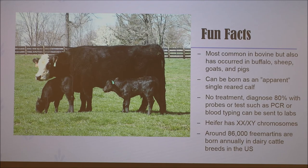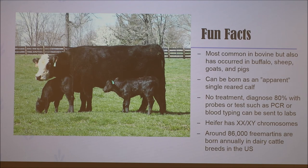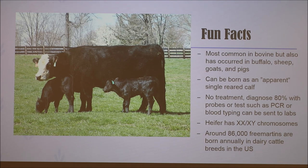There is no treatment for freemartinism. However, a diagnosis can be done using commercially developed probes to determine the length of the vagina, because in freemartins the length is usually about one-third of that of a normally developed heifer. This method is not always accurate because there can be false negatives, as some freemartins will have a normal-length reproductive tract. The probe can diagnose about 80% of freemartins, but if not, a polymerase chain reaction — PCR — for blood typing can be sent off to labs.